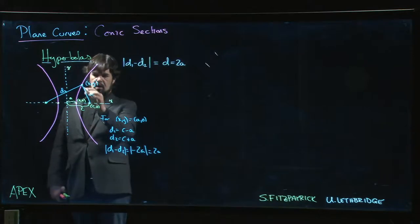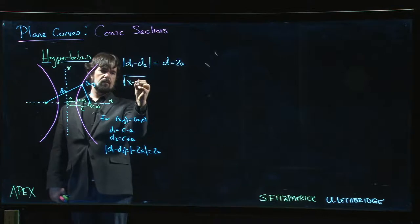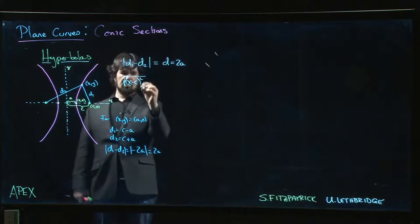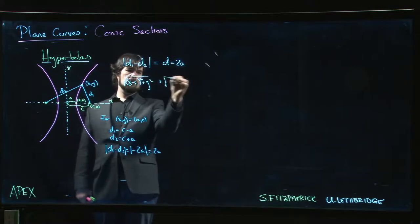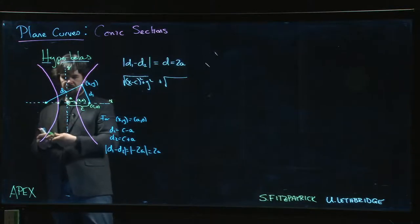The distance here, once again, is going to be sqrt[(x - c)² + y²]. And for the other one, this is going to be at (-c, 0).